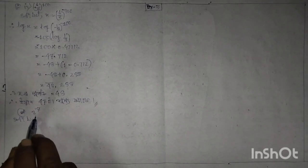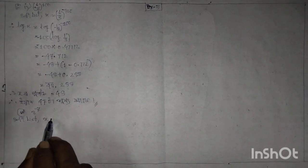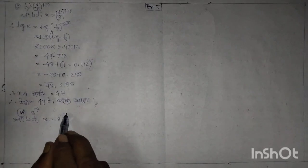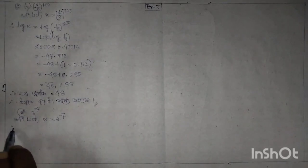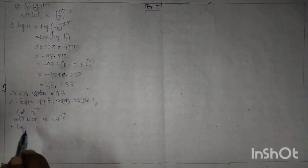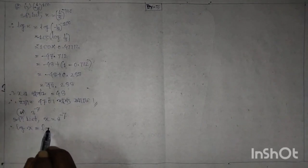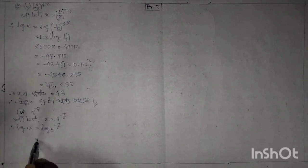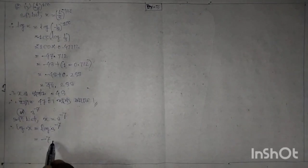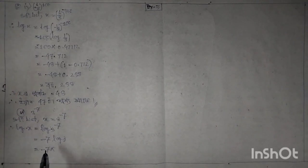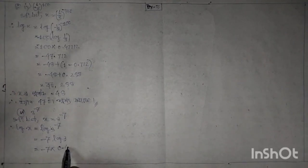Next question. Solution: x is equal to 3^(minus 7). Therefore log x is equal to log 3^(minus 7), which is equal to minus 7 into log 3. This equals minus 7 into 0.4771.